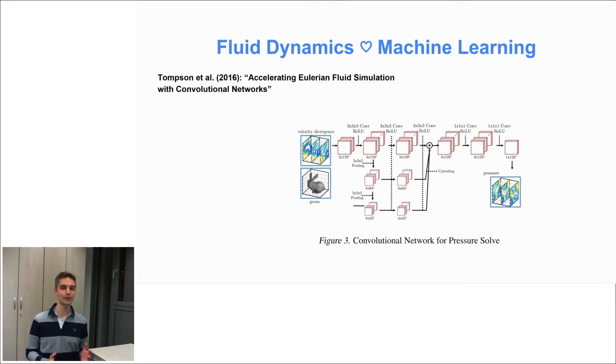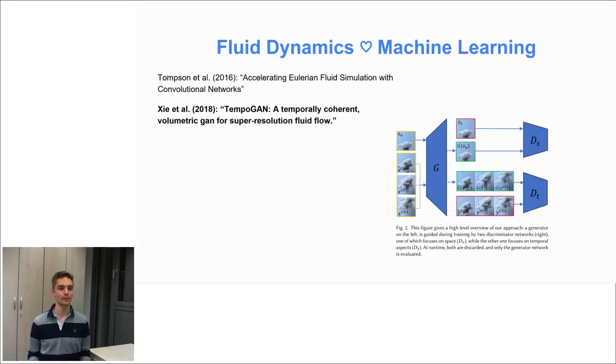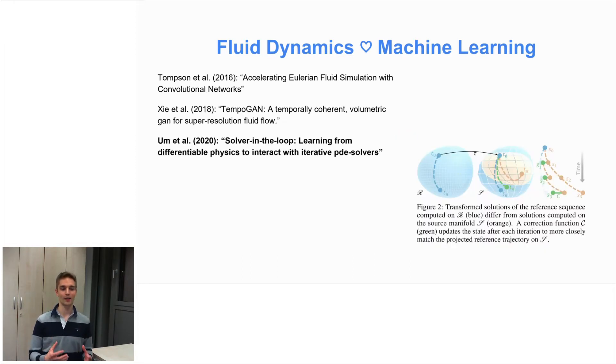Now in recent years CFD and machine learning really developed kind of a deep relationship with many vastly different approaches. For example, Thomson et al. proposed to learn a pressure solver with a convolutional network. Xie et al. used a tempo GAN in order to increase the resolution of smoke simulations. Um et al. proposed to learn a correction function which improves solutions of a low resolution fluid solver.